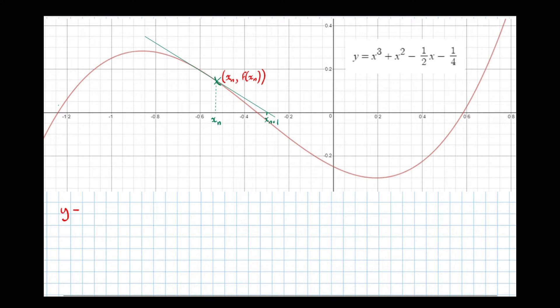y minus y1, the y value is f of xn, equals the gradient. The gradient, if we differentiate the curve at that point, equals m times x minus the x coordinate which is xn.